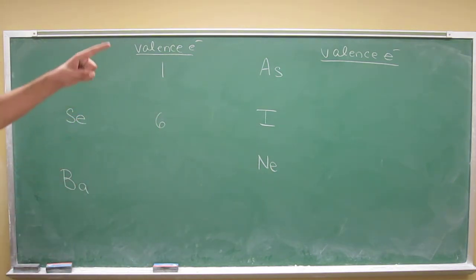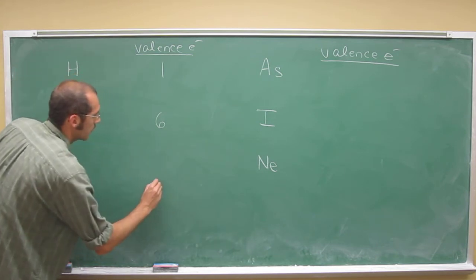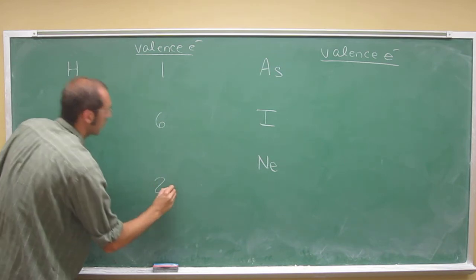Barium is in group two, all the way down. Do you see it? One of the bigger atoms in group two. So it's got two valence electrons, right?